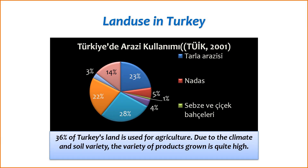2. Livestock farming — Grazing areas: agricultural land is used for providing grazing areas for livestock, including cattle, sheep, and goats. These areas support extensive livestock farming practices, contributing to meat and dairy production.